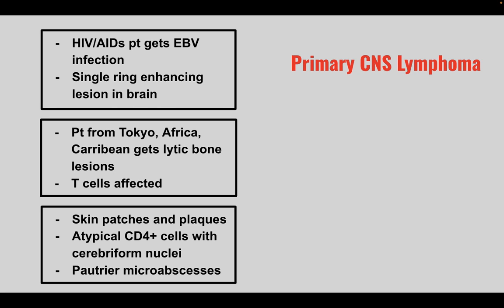Next is a patient from Tokyo, Africa, or the Caribbean that gets lytic bone lesions and T cells are affected. This is adult T cell lymphoma, associated with the HTLV-1 virus.